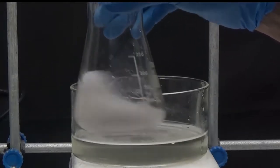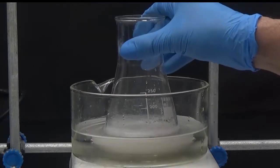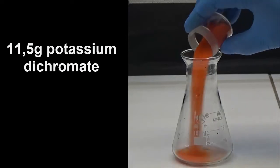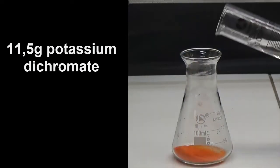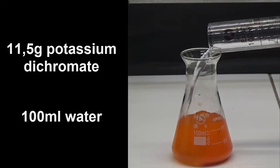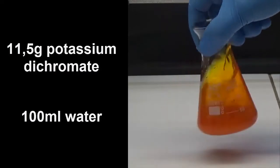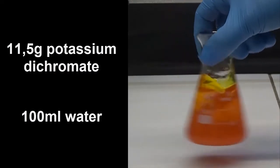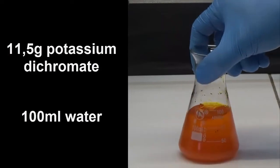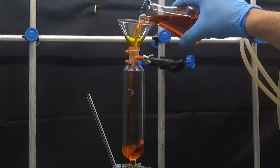Make a solution of 11.5 grams of potassium dichromate in 100 milliliters of water. Put the dichromate solution in an addition funnel.